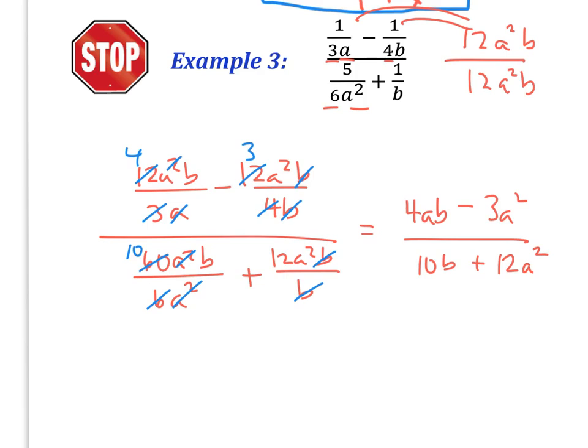From here, a big thing to think about is whether you have any common factors, anything you can simplify, or any factoring that can be done. I could factor an A out of the numerator, but I can't factor an A out of the denominator, so that doesn't help. I could factor a 2 out of the denominator, but that doesn't do anything either. So this is going to be my final answer — but at least I checked. Always look to see if anything can simplify further.